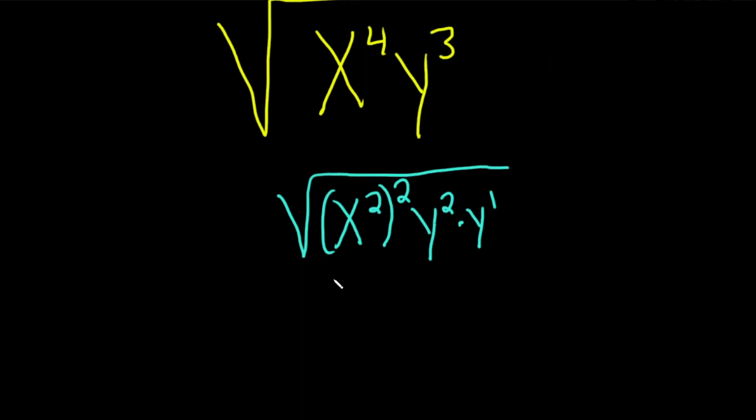Okay, so this is going to be... Go ahead and combine these squared terms. It's really x squared y squared, right? Combining these properties of exponents times the square root of y.